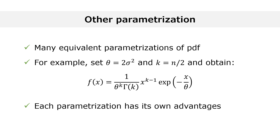When you deal with the gamma distribution, in your homework or in your statistical analyses, the first thing that you need to do is to check which parametrization is being used.